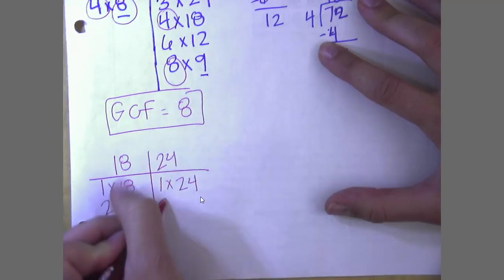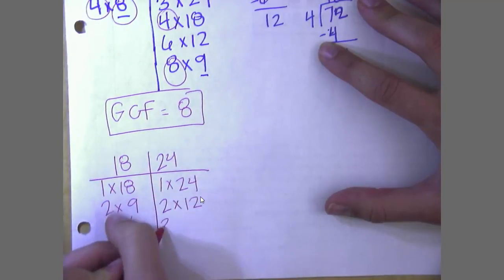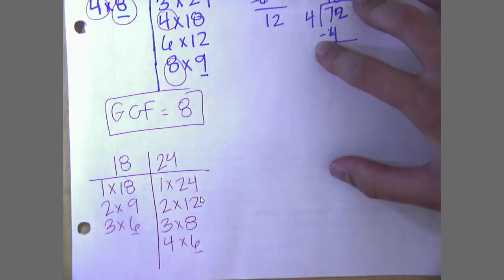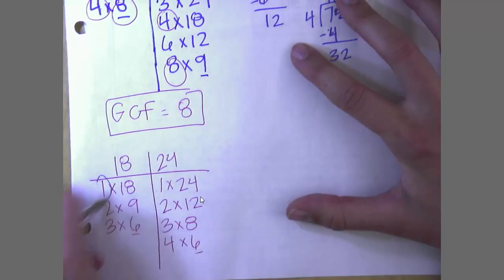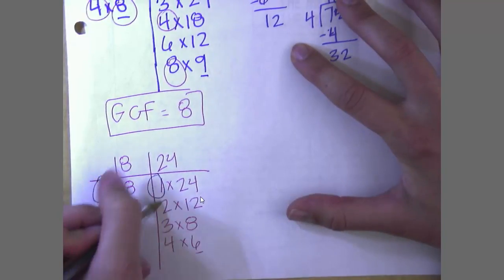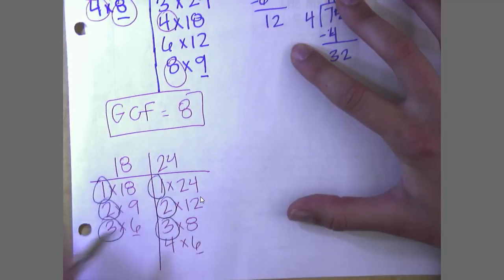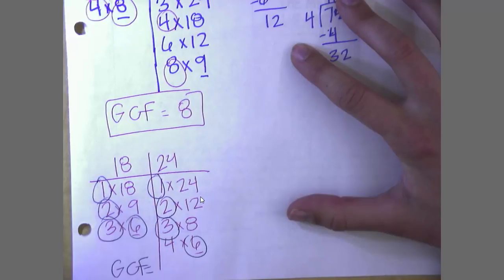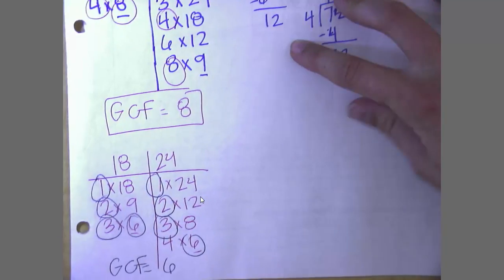1 times 24, 2 times 12, 3 times 8, 4 times 6. No 5's. And I've already got my 6's written down. So I'm going to circle the ones that I've got in common. And again, I want that very biggest number that they both have. And my greatest common factor will be 6.